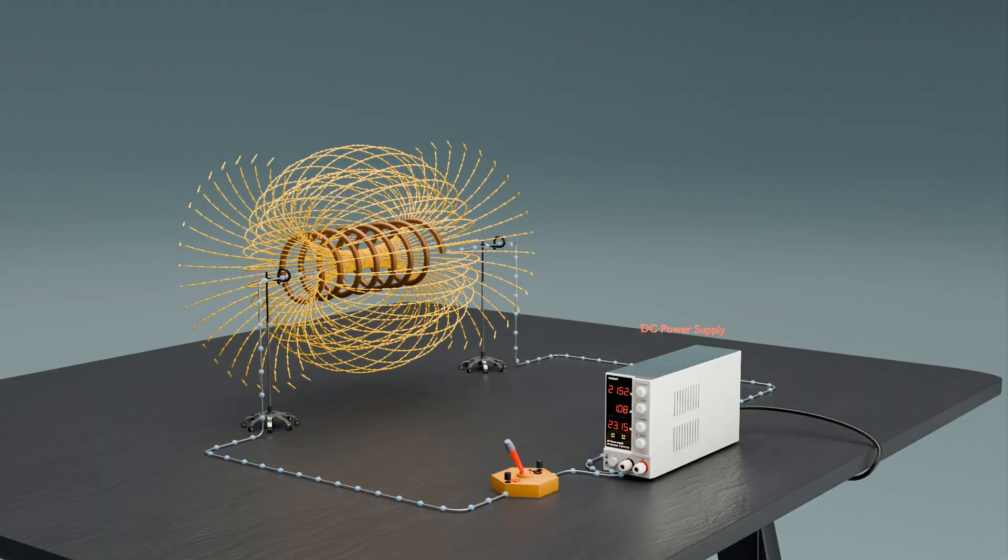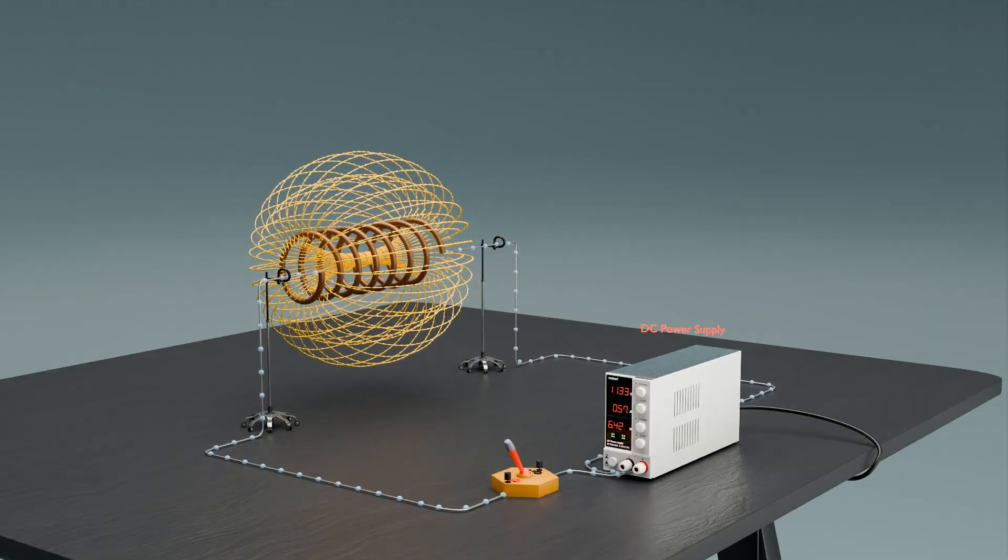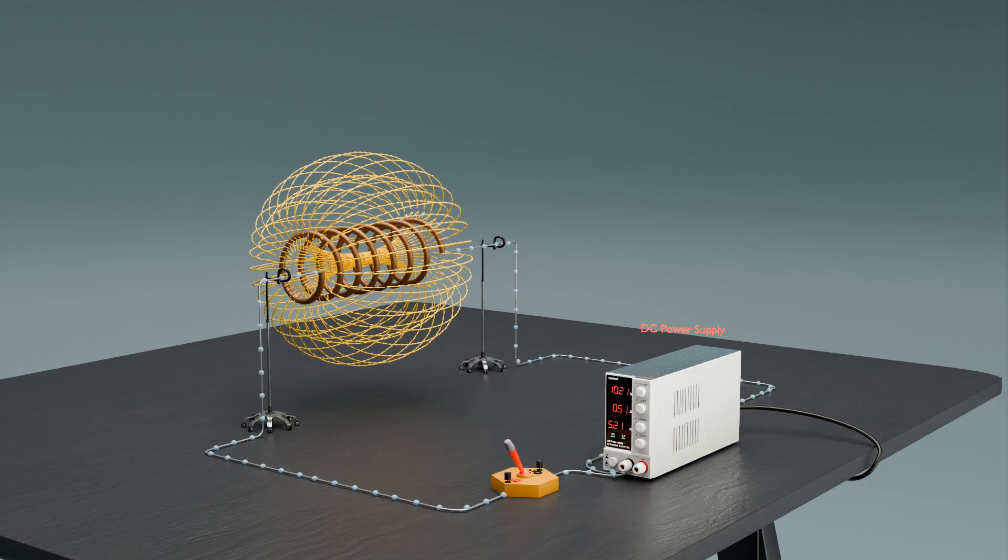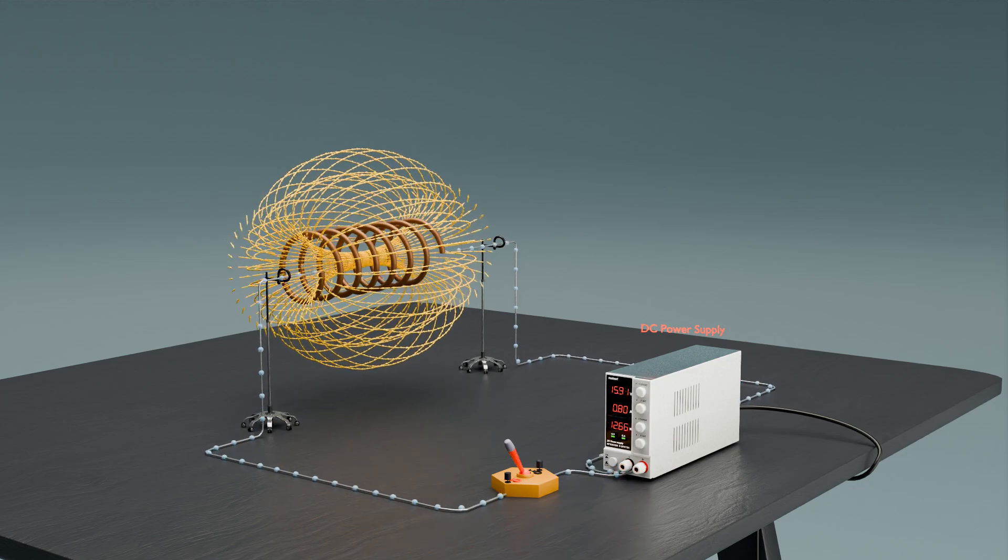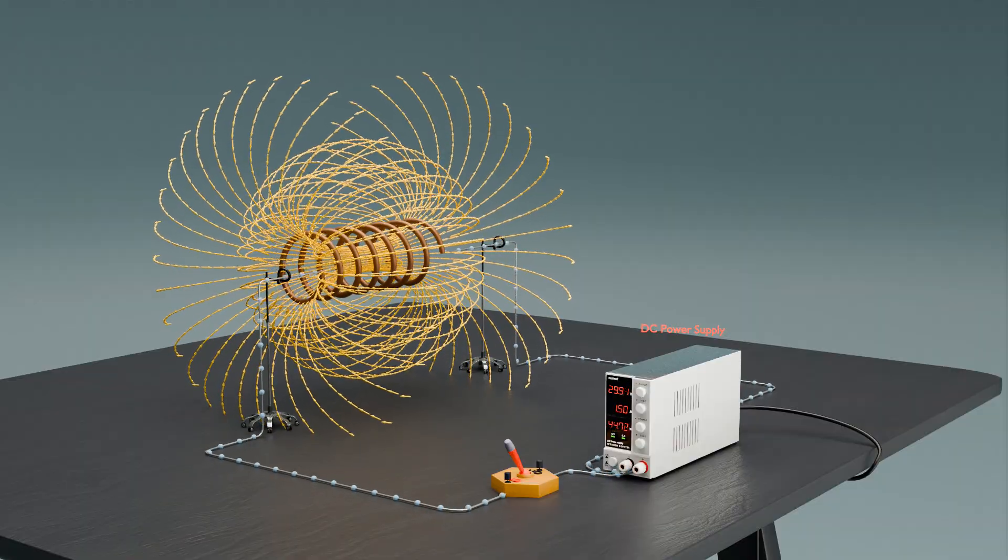As we observe the inductor, notice how the magnetic field strength, represented by the density of the flux lines, increases with the current. This visual representation helps us understand the direct relationship between the current and the magnetic flux in the inductor.